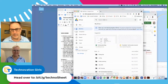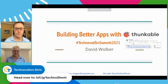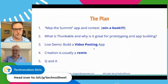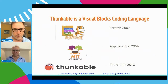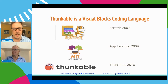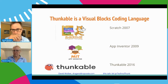So let's talk about Thunkable. It's a visual blocks coding language that really lives on the shoulders of some MIT-related tools — Scratch, which a lot of people now use, especially youngsters, and MIT App Inventor. Thunkable was actually started by two guys who were grad students at MIT working on App Inventor. They started this company and built this wonderful tool.